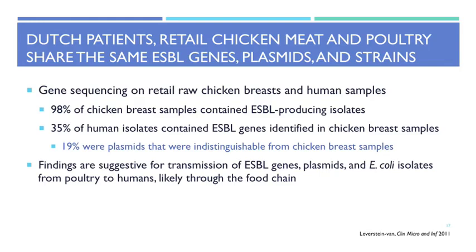A Netherlands study looked at transfer from animals to humans. They tested chicken breast samples sold in grocery stores and found 98% contained an ESBL-encoding gene. After patients consumed the chicken, 35% of their intestinal microbiome isolates contained ESBL genes, and further sequencing showed 19% were indistinguishable from the ESBL genes found in the chicken. This demonstrates that resistance can be passed from the food chain to humans — ESBL genes are plasmid-mediated, making this transfer plausible.